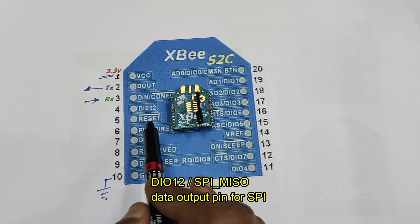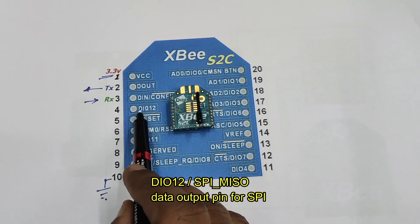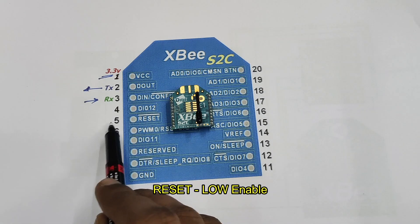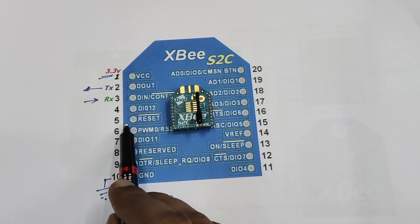4th pin acts as IO 12 or as a data output pin for SPI communication MISO. Pin 5 is reset which is low enabled. A low will give a hard reset.